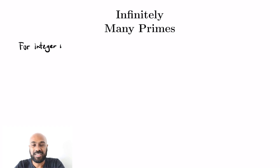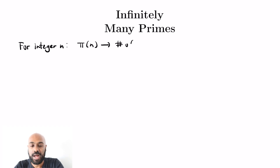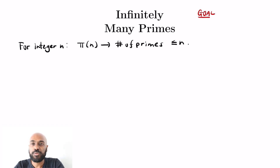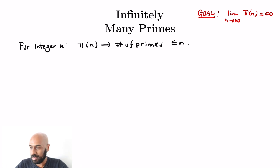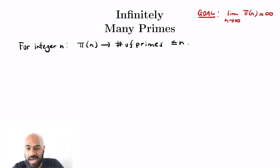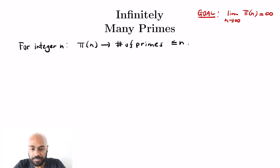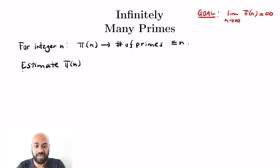The first proof deals with counting: for any positive integer N, this number π(N) is the number of primes less than or equal to N. For example, if N was 50, we'd be counting all the primes from 1 to 50. To prove there are infinitely many primes, we can prove that this counting number goes off to infinity — this is a natural thing to do. So to get that the limit as N approaches infinity of π(N) is infinity, we'll do this systematically by thinking about numbers less than or equal to N to estimate what π(N) actually is.